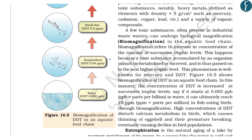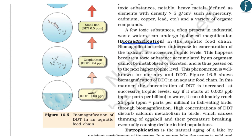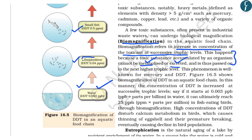Another phenomenon discussed is biomagnification, which refers to the increase in concentration of a toxicant at successive trophic levels. Toxic substances accumulate in organisms because they cannot be metabolized or excreted. A particular example is DDT — its concentration keeps increasing as one moves from lower to higher trophic levels. High concentration of DDT disturbs calcium metabolism in birds, causing thinning of eggshells, premature breaking, and eventual decline in bird populations.